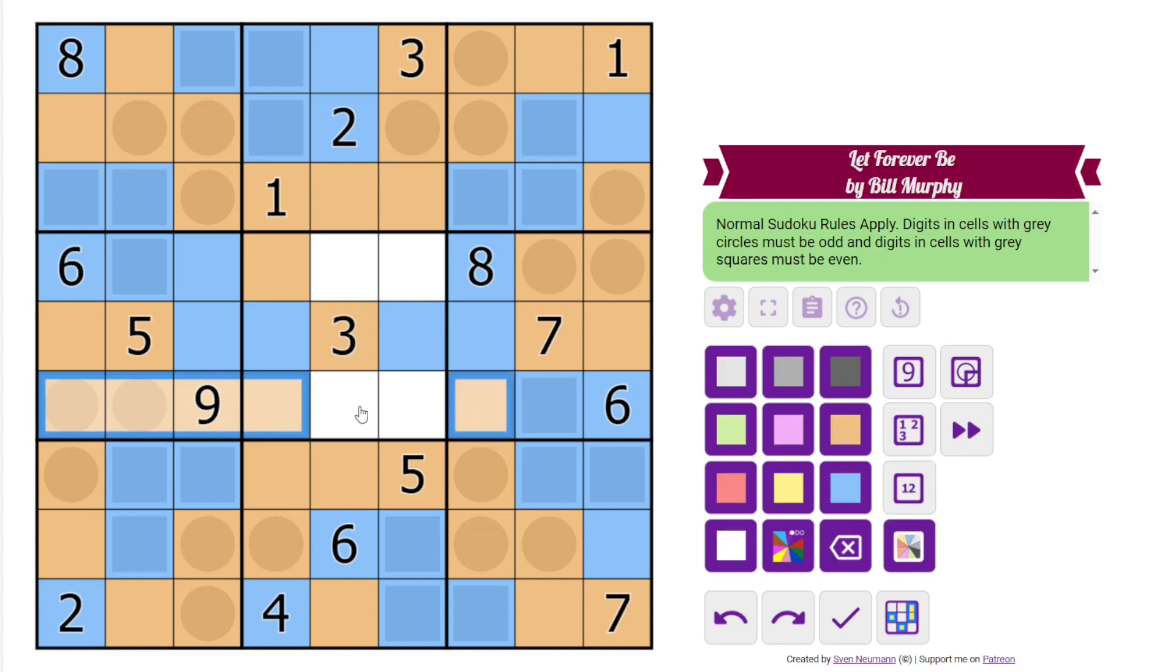Now we have all the even digits in this row. So those are even. And now the last 2 cells are odd. We also had all the even digits in this row. So now we have fully colored the grid.